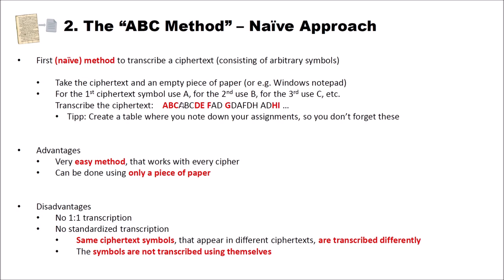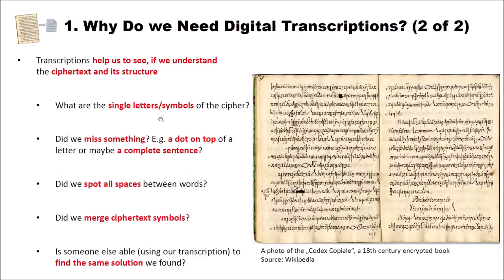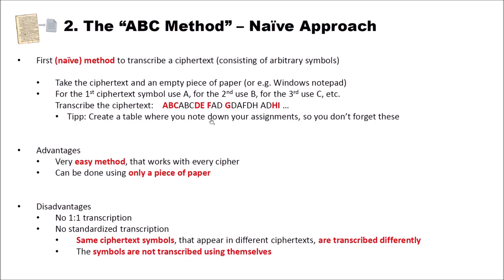I have a tip: create a table where you note down your assignments so you don't forget them. For instance, with the Copiale cipher, this symbol would be A, this would be B, this would be C. You copy the original ciphertext symbols onto paper and add the transcribed symbols A, B, C beside them — so in fact, you are creating the key. It is not really the key since it is still encrypted, but it is a transcription you can then use for cryptanalysis, for instance with CrypTool 2.